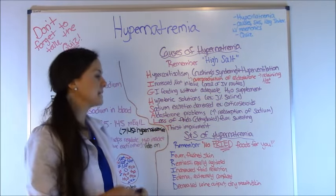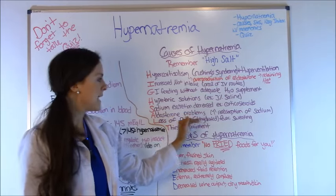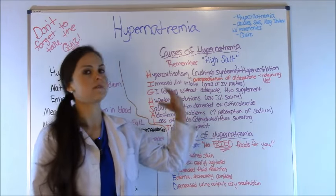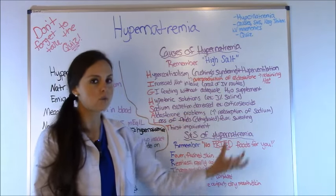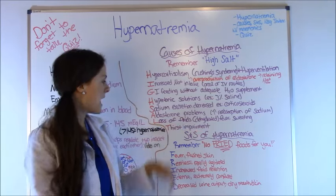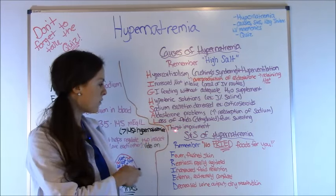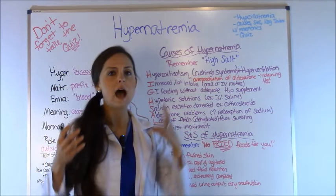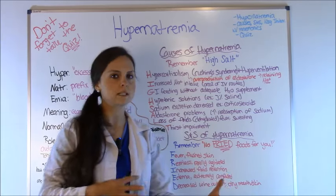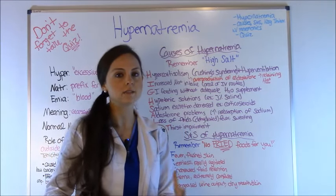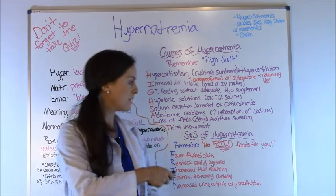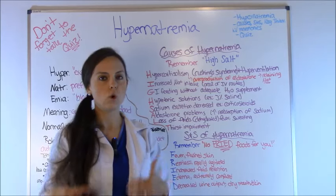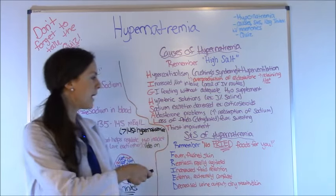The last letter in HIGH SALT is T for impaired thirst — the patient is simply not thirsty. You see hypernatremia especially in elderly patients or someone who doesn't have access to fresh water.